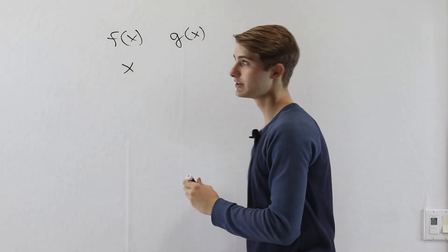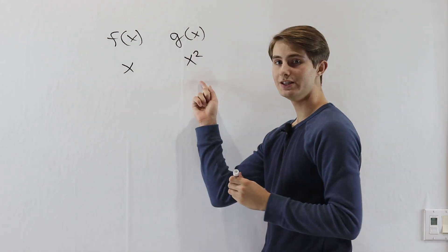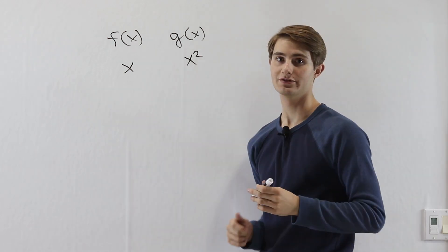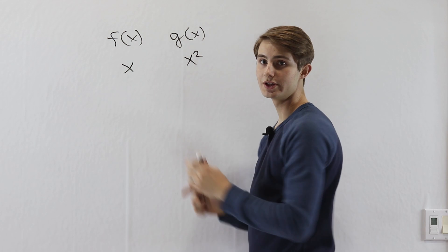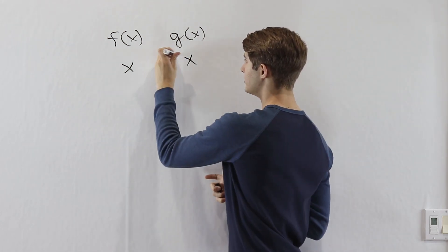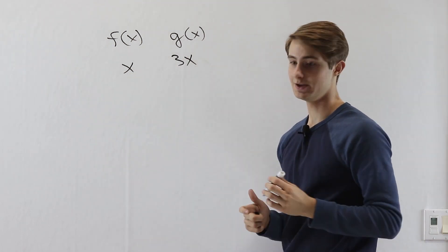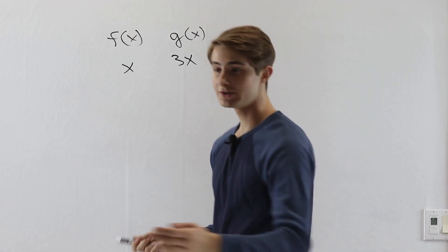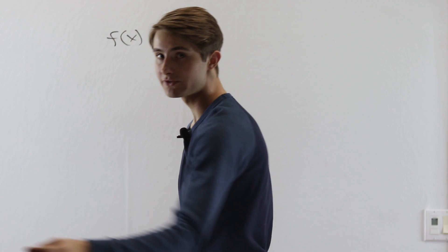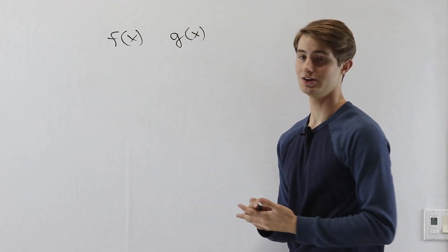For example, if f of x equals x and g of x equals x squared, well x is not equal to just a constant multiple of x squared for every value of x, and therefore these are linearly independent. But if instead we had x and 3x, these would not be linearly independent. This is important in differential equations because a homogeneous differential equation must have a certain number of linearly independent solutions.